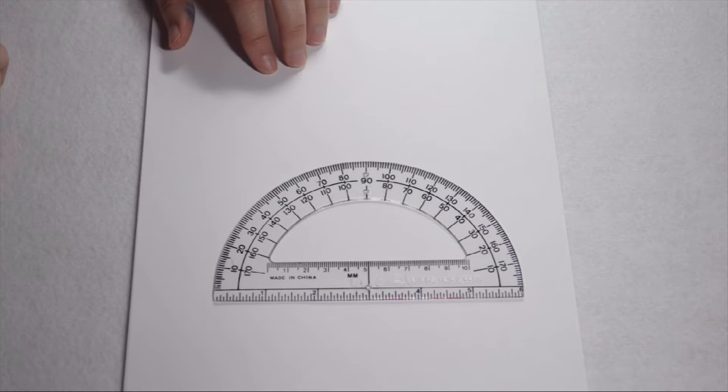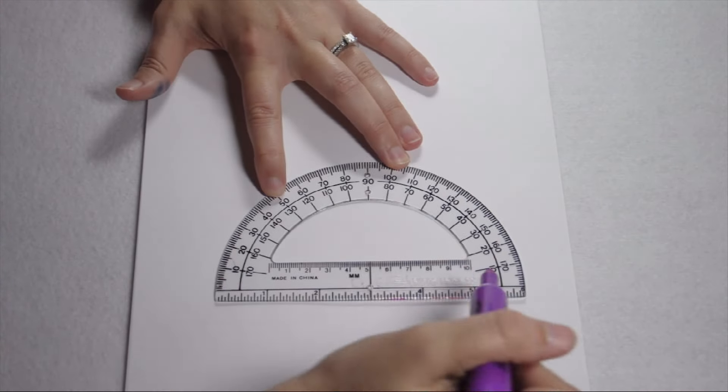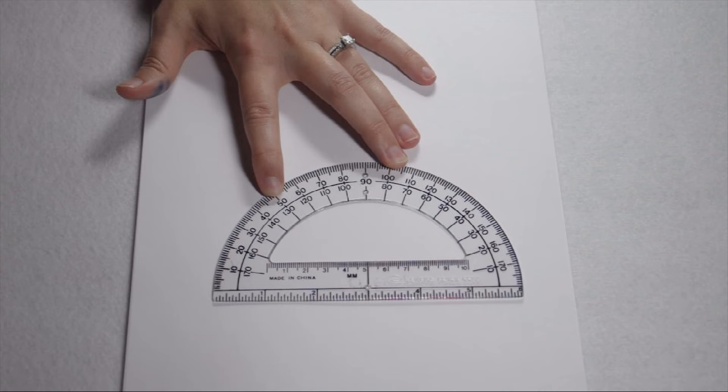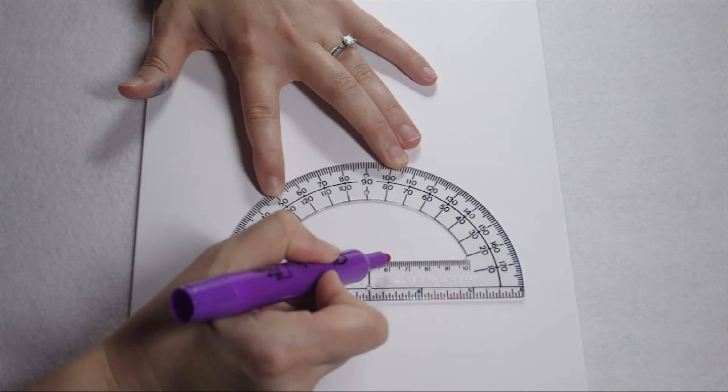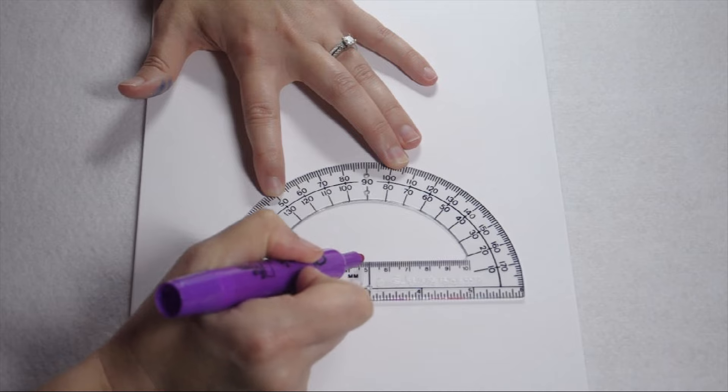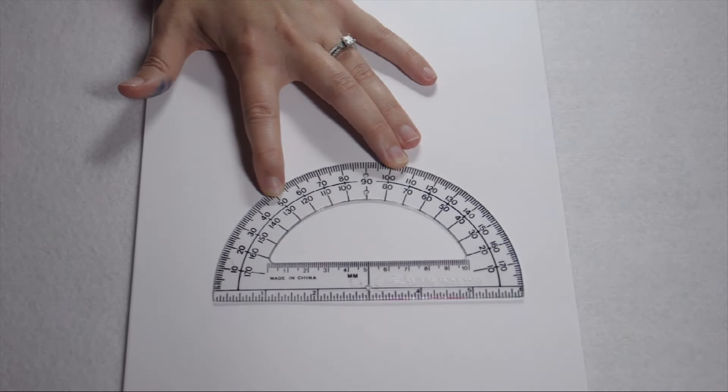We need to draw a 250 degree reflex angle. The problem is our protractor only measures up to 180 degrees. In order to do that, we need to remember the 250 degree reflex angle plus the angle on the inside combined to make a complete circle worth 360 degrees.